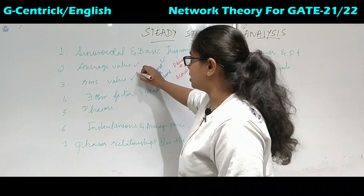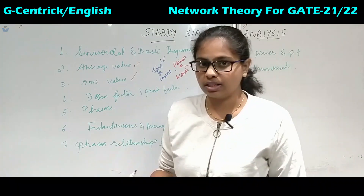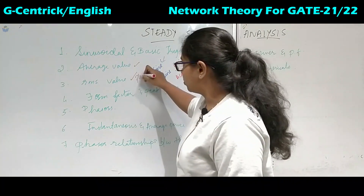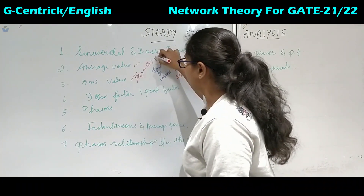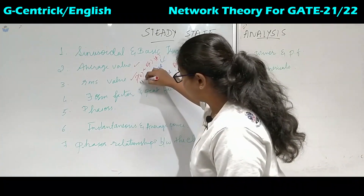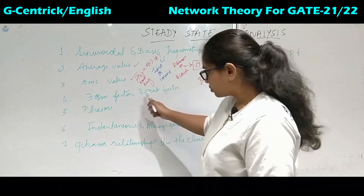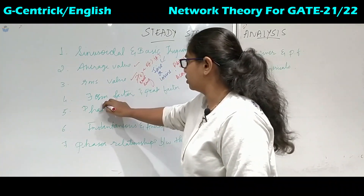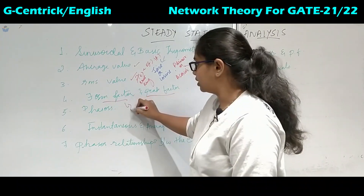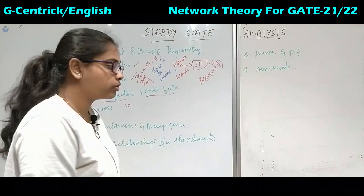The second topic is average and RMS value. The current and voltage we receive in our homes is RMS. But when you calculate power — since it is the multiplication of V(t) and I(t) — if both are RMS, then power will never be RMS; it will always be measured as average power. Next we have form factor and peak factor. The form factor helps explain why AC transmission is always in multiples of 11, because the value of the form factor is 1.11. That is why power is always transmitted in multiples of this value.